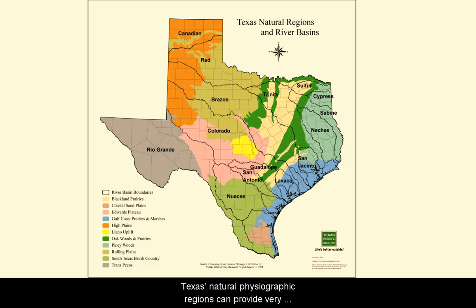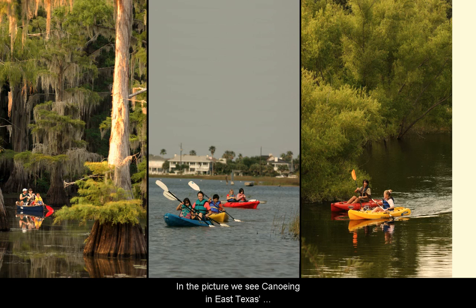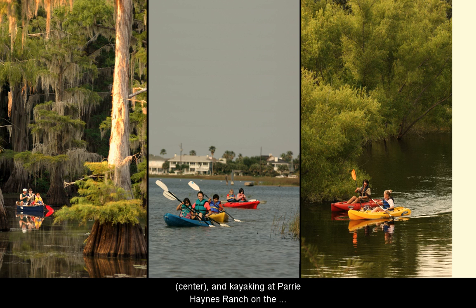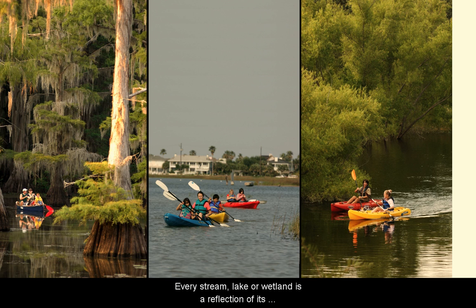Texas' natural physiographic regions can provide very different boating and fishing experiences. In the pictures here, we see canoeing in East Texas' Caddo Lake on the left, paddling in Aransas Bay near Rockport in the center, and kayaking at Prairie Haines Ranch on the Lampasas River near Killeen on the right.